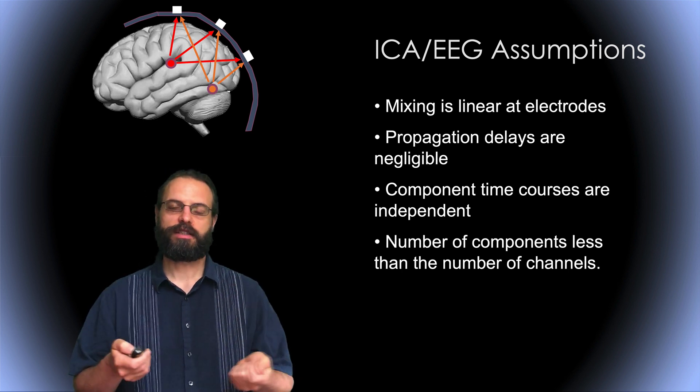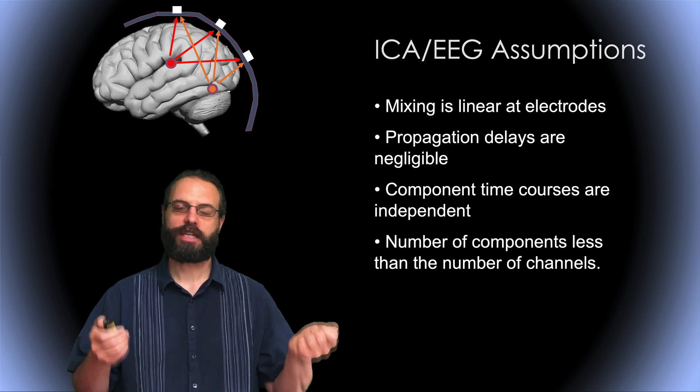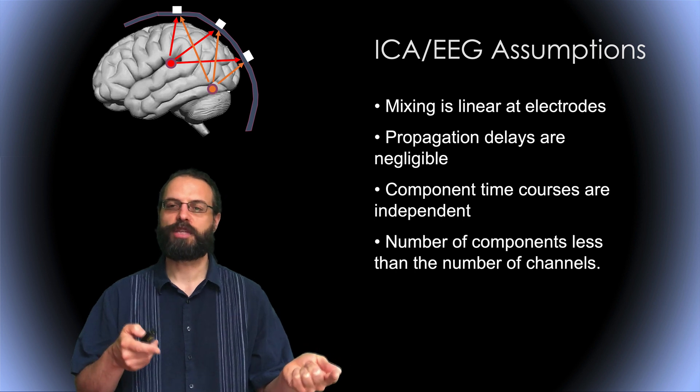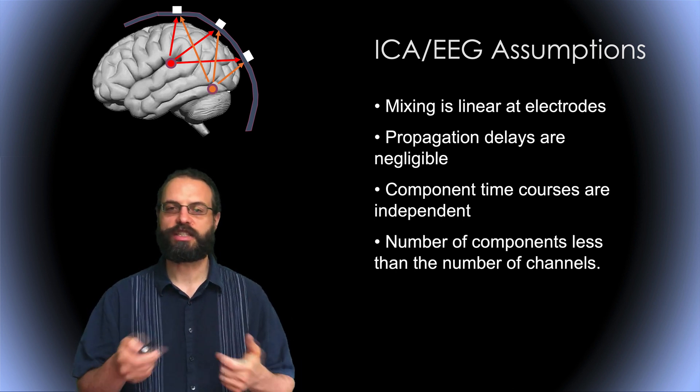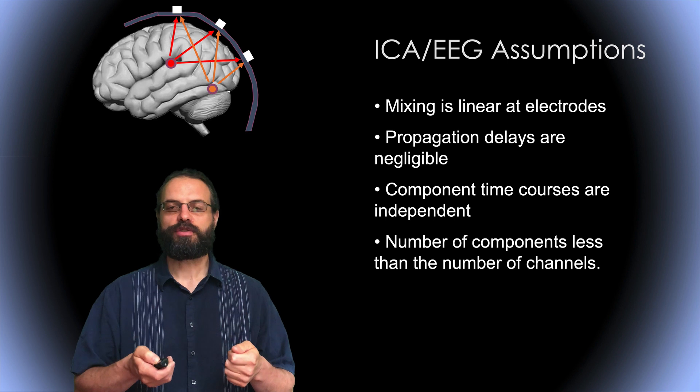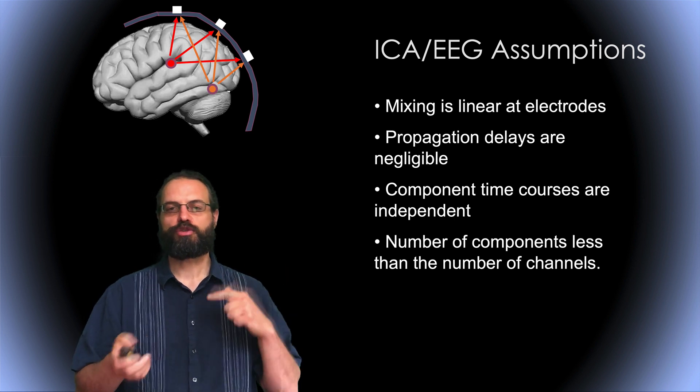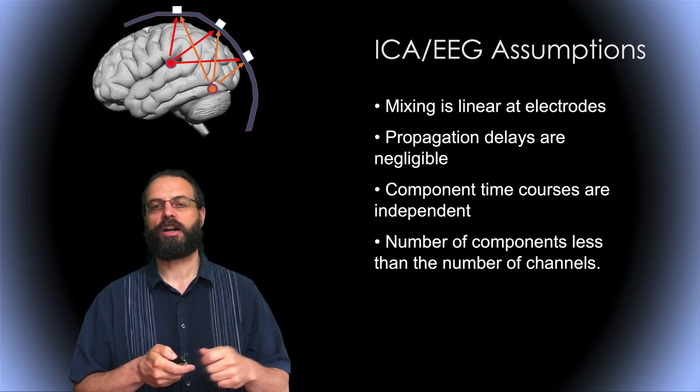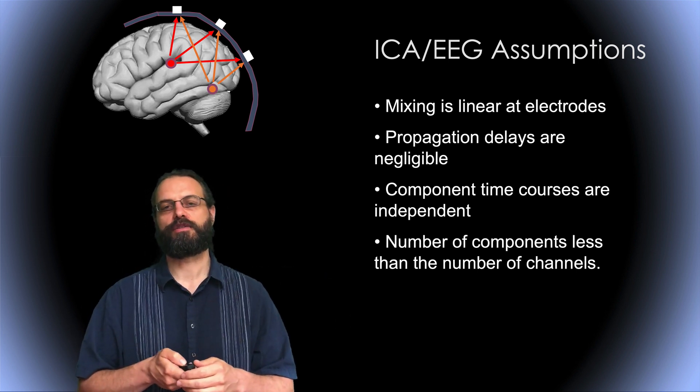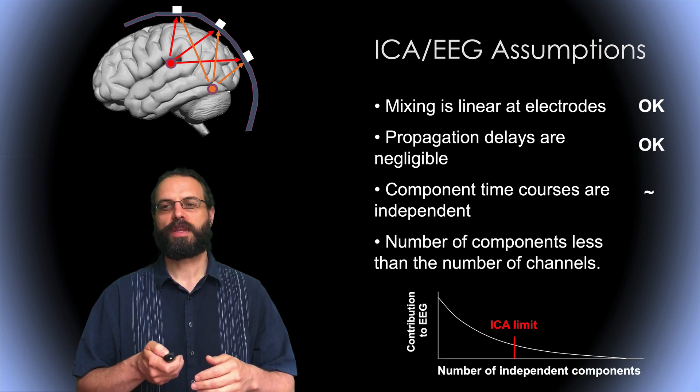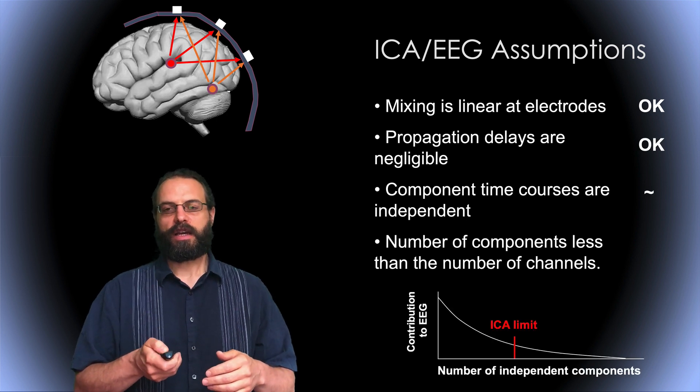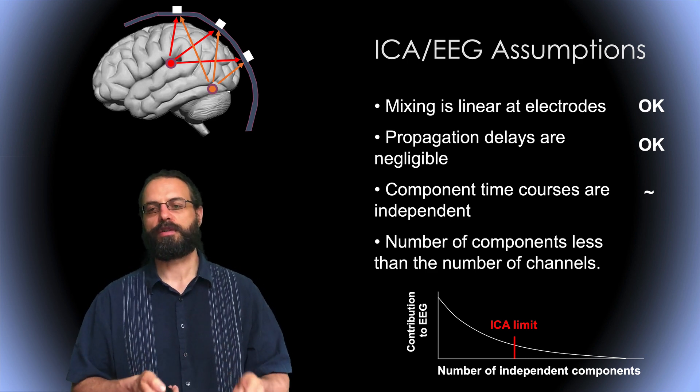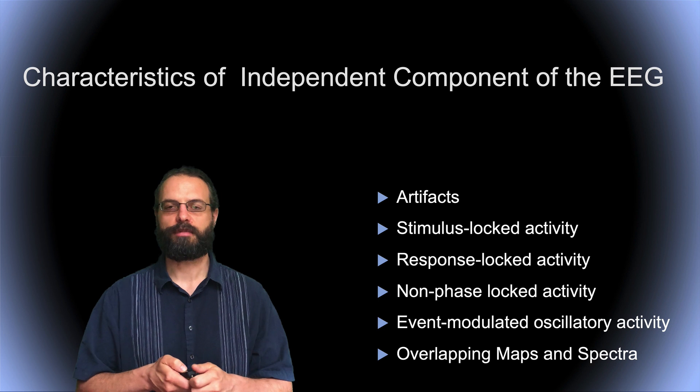Finally, the number of components should be less than the number of channels. This is not necessarily a reasonable assumption. You can imagine that every single neuron in the brain or even every single synapse could be an independent contributor to the EEG signal. But what ICA will do is that it will find the sources which contribute the most to the EEG signal and apply some sort of cutoff.